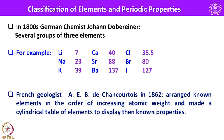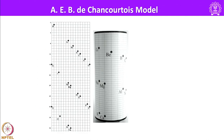Another French geologist, De Chancourtois, in 1862 arranged known elements in the order of increasing atomic weight and made a cylindrical table of elements to display their known properties. This is considered the first chart — called De Chancourtois' model — to depict the physical and chemical properties of elements in one organized order.